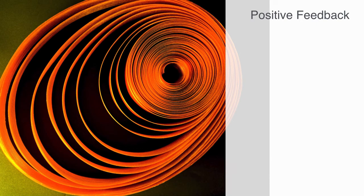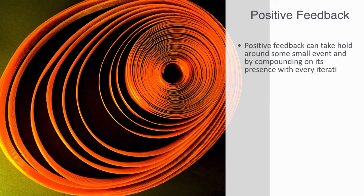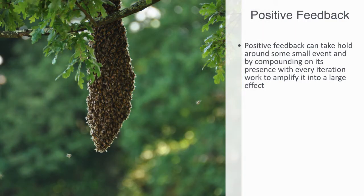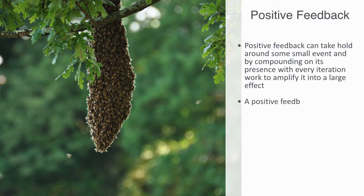Some small fluctuation can only really gain traction given positive feedback. Positive feedback can take hold around some small event and, by compounding on its presence with every iteration, work to amplify it into a large systemic effect. One example of this would be the process whereby bees form swarm attacks against enemies. When a potential enemy is identified, a bee may attack, but the bee also releases a pheromone communicating to others to do likewise. Thus, for every new bee that attacks, we get a stronger accumulation of pheromones, placing an ever greater attraction on other bees to join. This is an example of a positive feedback process synchronizing the states of the bees as they come to form a swarm around the enemy.